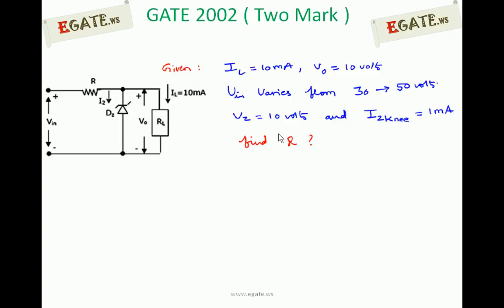We see the details now. This is the given zener voltage regulator. The requirements are: load current has to be 10mA, output voltage is 10V, input voltage varies from 30V to 50V. Zener breakdown voltage is 10V and zener knee current, which is the minimum zener current required to keep the zener diode in breakdown region, is 1mA.